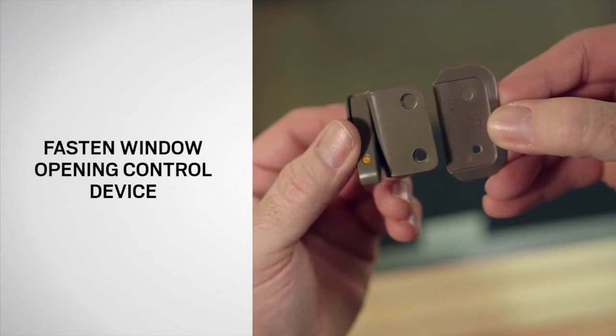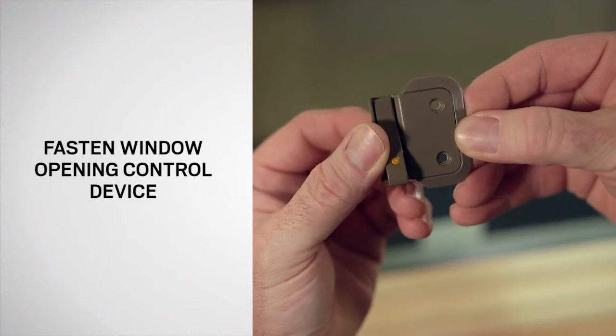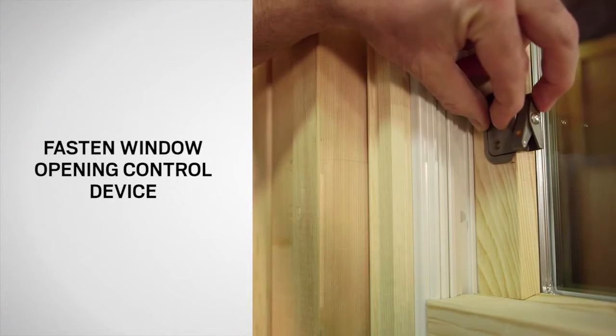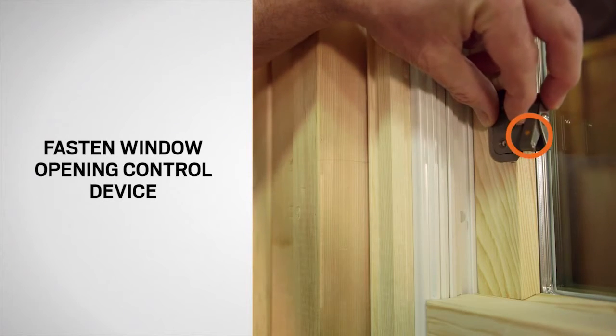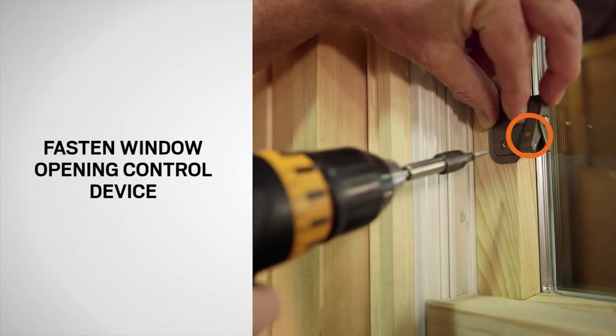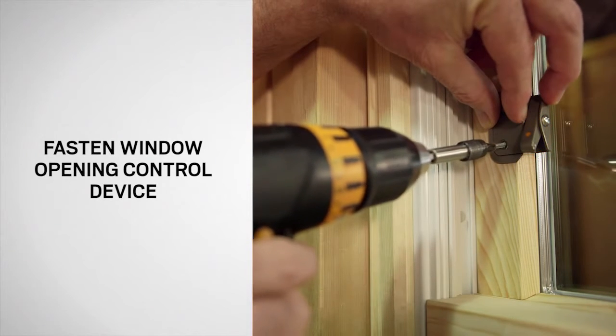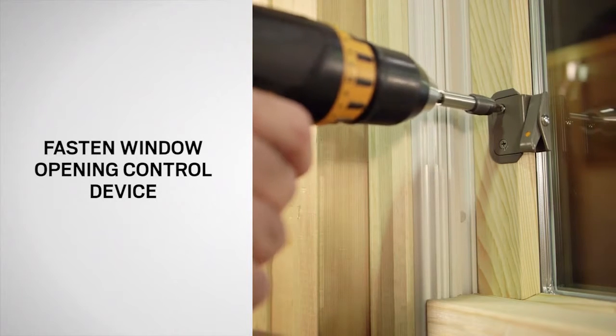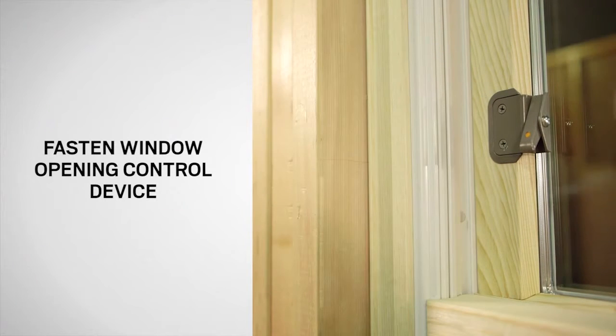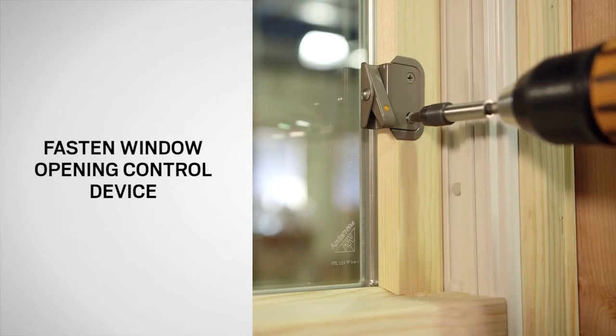Place the opening control device on the boot as shown. Then, keeping the dot at the bottom, fasten the device to the top sash using the supplied screws. Repeat for the opposite side.